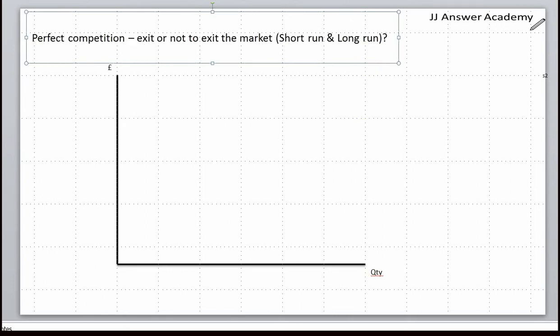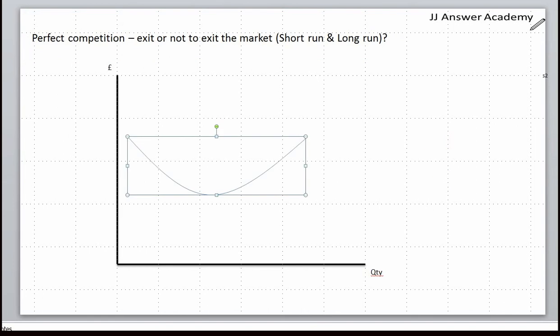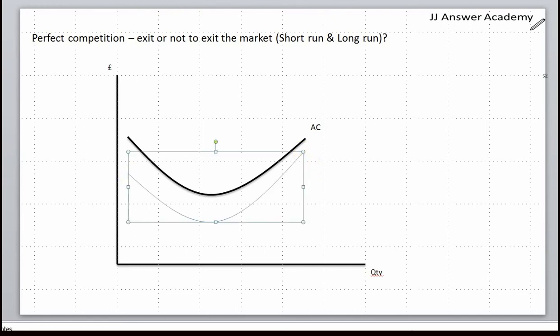This is the perfect competition firm's average cost curve. The average cost curve is made up of the firm's average variable cost, average total cost, and the average fixed cost which is falling lower and lower.